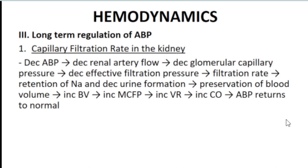Renal regulation: the juxtaglomerular apparatus in the kidney monitors blood pressure. If BP drops, less blood enters the kidney, reducing glomerular capillary pressure and filtration pressure. Filtration rate adjusts so that sodium is retained. Where sodium is retained, water follows — blood volume increases, venous return increases, cardiac output increases, and BP normalizes.